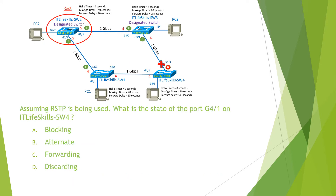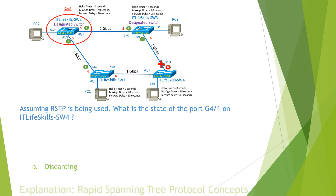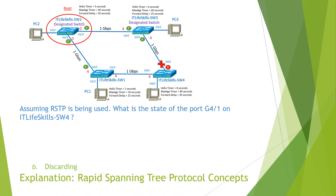The question reads: assuming rapid spanning tree protocol is being used, what is the state of port G41 on Switch 4? From the diagram, we see that port G41 is in blocking state. However, in rapid spanning tree, it uses the state 'discarding' instead of 'blocking.' So the answer for this question is D. You can find the detailed explanation in the video: rapid spanning tree protocol concepts.